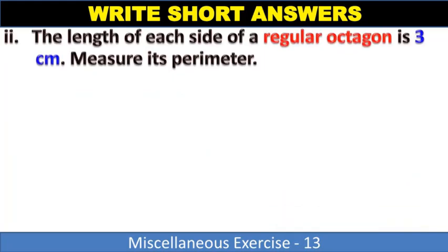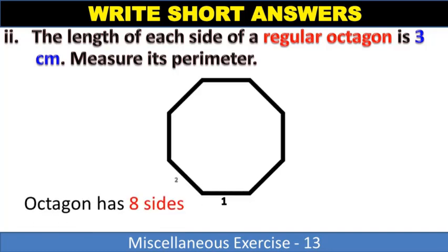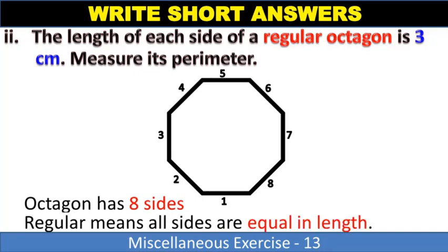Question number two: The length of each side of a regular octagon is three centimeters. Find its perimeter. Very easy. Octagon has 8 sides, and regular means all sides are equal in length. So if one side is 3 cm, the perimeter is 8 × 3 = 24 centimeters.